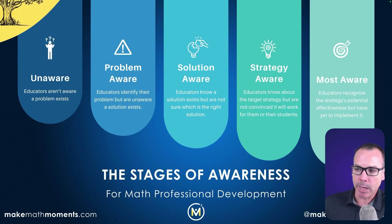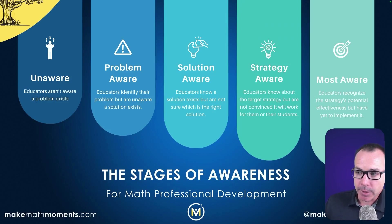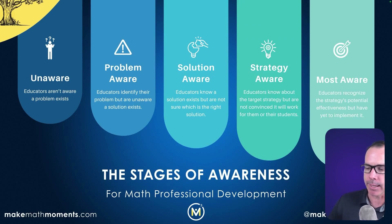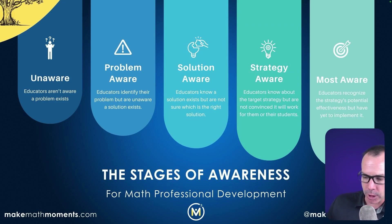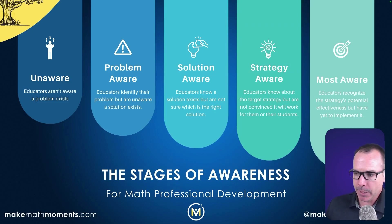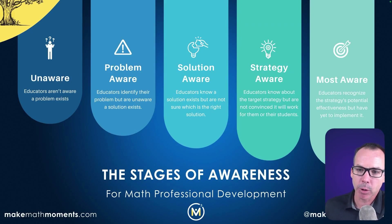Before implementation, we're just building awareness of what needs to happen. The fifth stage — most aware — is where educators recognize the strategy's potential effectiveness but are still working to implement it. They're at the edge of implementation, ready to give it a shot. This is where we need to provide follow-up — the teacher tries it and gets reinforcement from a coach, through system-wide professional development, or through peer accountability — so that the follow-up maintains the consistency and adoption of that strategy.